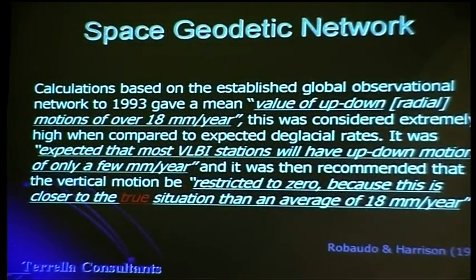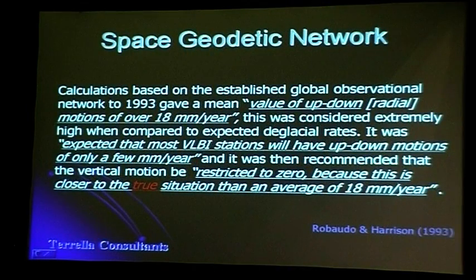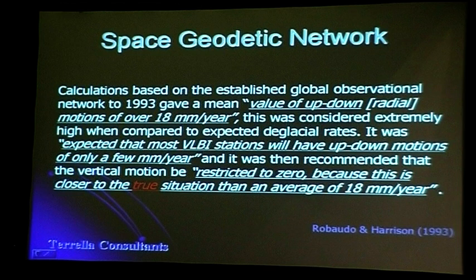Modern technology now allows us to accurately measure the dimensions of the Earth from satellite laser ranging and various other techniques, and also to measure plate motion — the migration of the continents on a yearly basis down to sub-centimetre accuracies. This has been ongoing since about 1976, but it wasn't until 1993, when enough ground-based stations were available worldwide, that 17 years' worth of information could be used to calculate a radius of the Earth. What they found was that the Earth was expanding by 18 millimetres per year.